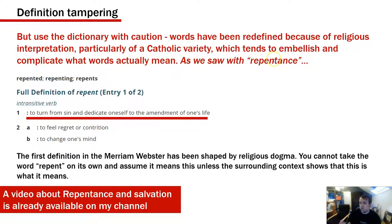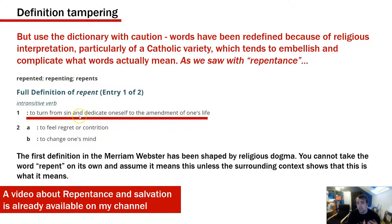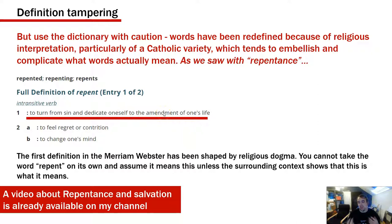Use the dictionary with caution because words have been redefined through religious interpretation, particularly of a Catholic variety, which tends to embellish what words actually mean. We saw this with repentance — the Merriam-Webster's first definition is 'to turn from sin and dedicate oneself to the amendment of one's life,' while the second is 'to feel regret or contrition, or to change one's mind.' That second definition makes more sense given how the Bible uses the word, because the first breaks down when God repents or when repentance isn't specifically about turning from sin.